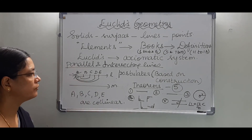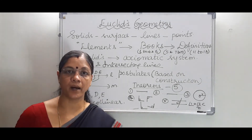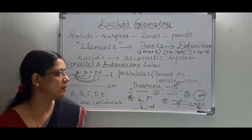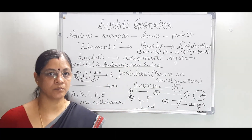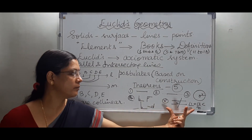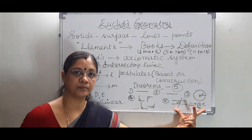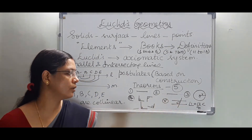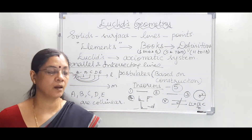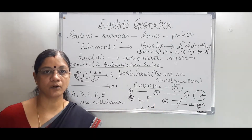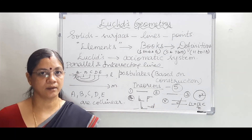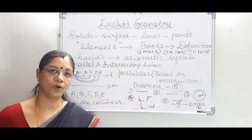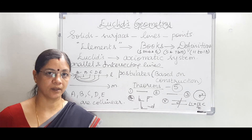So those are some of the axioms given by Euclid. In the next class, we will be seeing his famous five postulates, out of which the fifth postulate — called the theorem of parallelism — is still under much discussion. We will be seeing those in the next class. Until then, keep watching. Thank you.